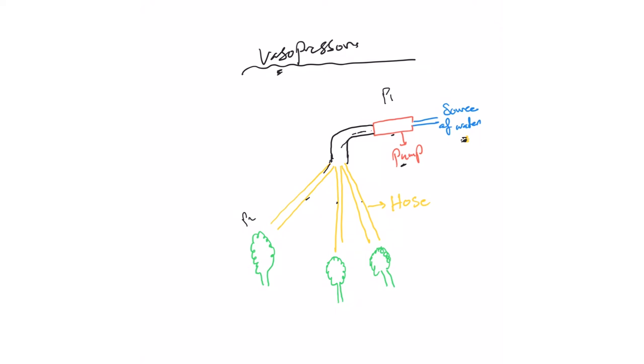For this system to work, you have to have enough water, a functioning pump, and functioning hoses. Functioning hoses means we should not have any blockage here.